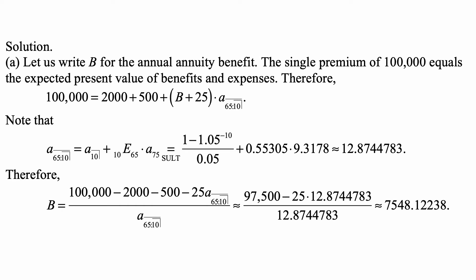Now a75 is not in the table but a̅̈75 is, and if we just subtract 1 from it we get a75, so that equals 9.3178. And we do the calculation, we get this annuity factor to be 12.8744783.